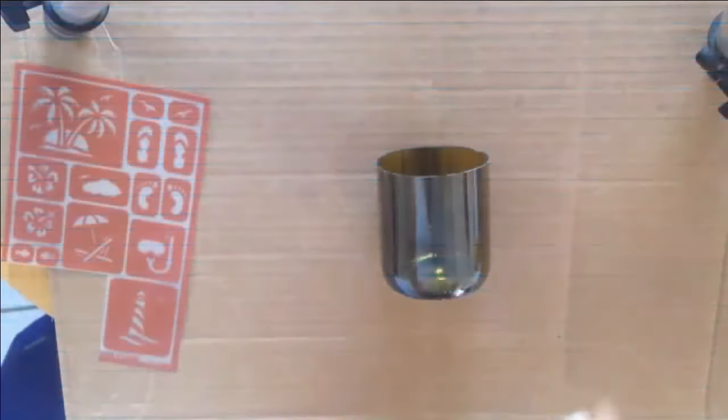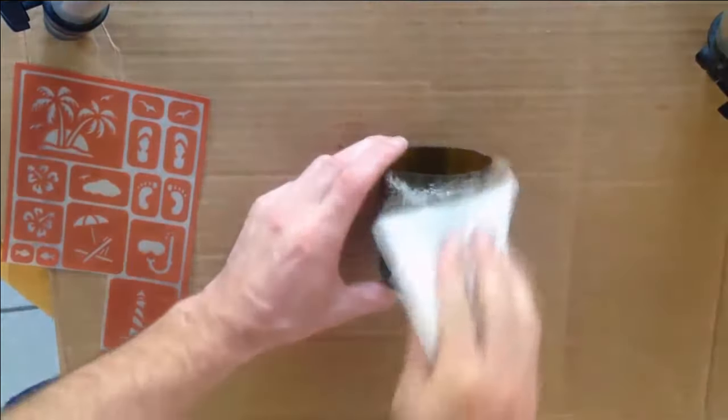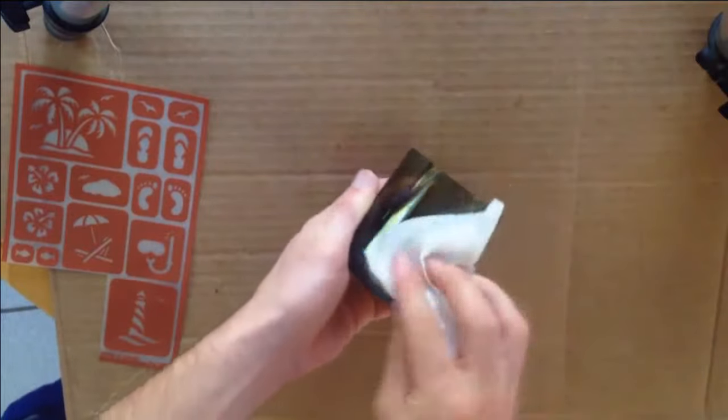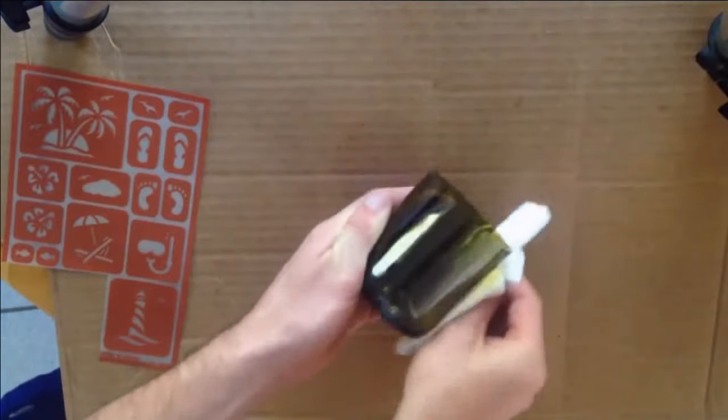In this part, I'll show you how to use our stencils. For demo purposes, we'll be using a stencil from the tropical and beach sheet. As you can see, the first step is to always clean the surface to remove all oil residue. This will allow the best adhesion and prolong the life of the stencil.